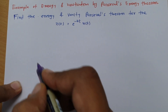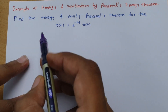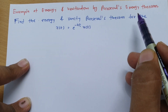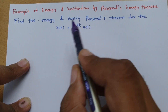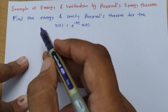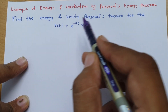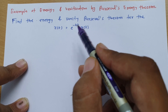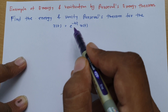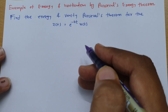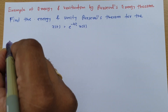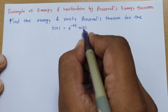Welcome to the Signal and System lecture series. In this session, I will explain an example of energy calculation and verification by Parseval's energy theorem. We have a question where we are asked to identify energy and verify it by Parseval's energy theorem for the signal x(t) = e^(-4t) u(t). Let us calculate this energy first by the basic formula and then verify it with Parseval's energy theorem.